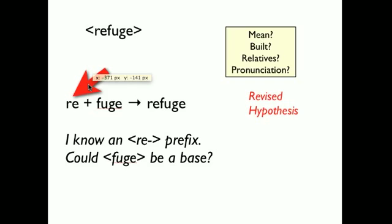If I have an R-E prefix, I am saying there must be a F-U-G-E base, which is possible, because there are such things. I don't know a word F-U-G-E, but it could be a bound base. So, how can I test that?